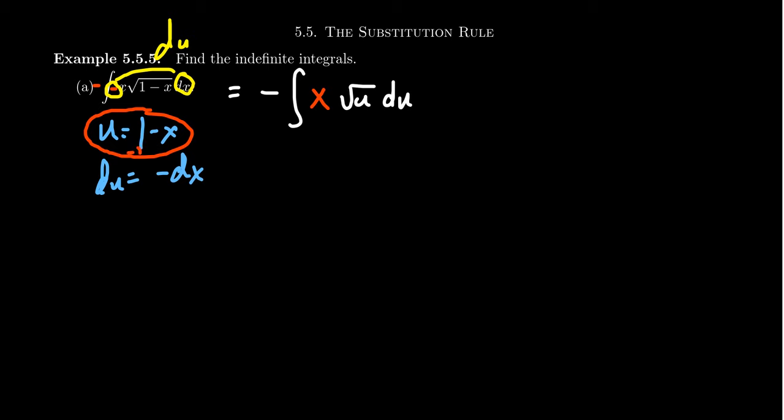For example, we could subtract one from both sides and we end up with u-1 equals -x. And if we multiply both sides by negative one, we end up with x is equal to 1-u. And this equation right here, we can substitute in above for the original expression, x there.